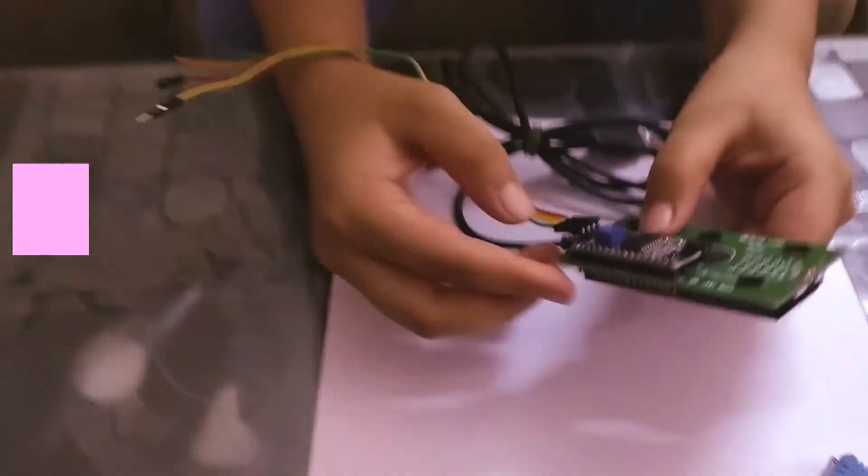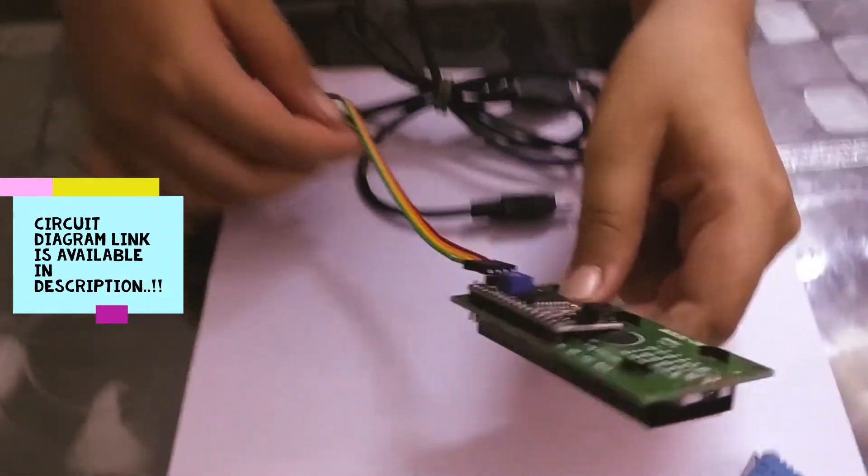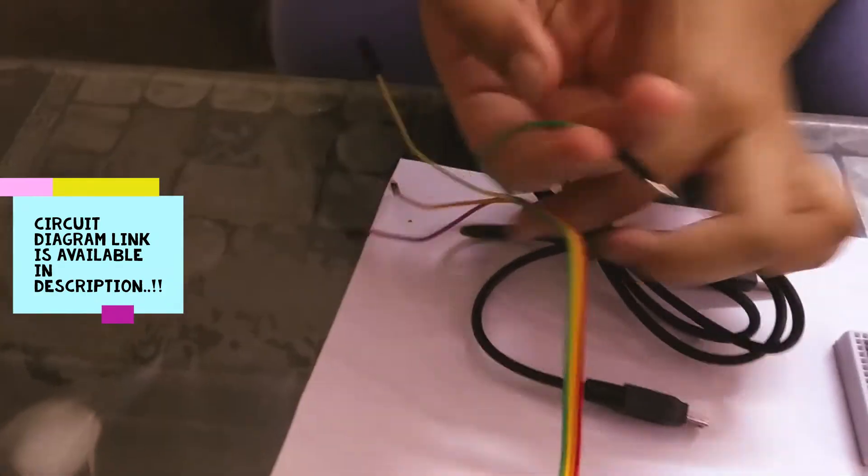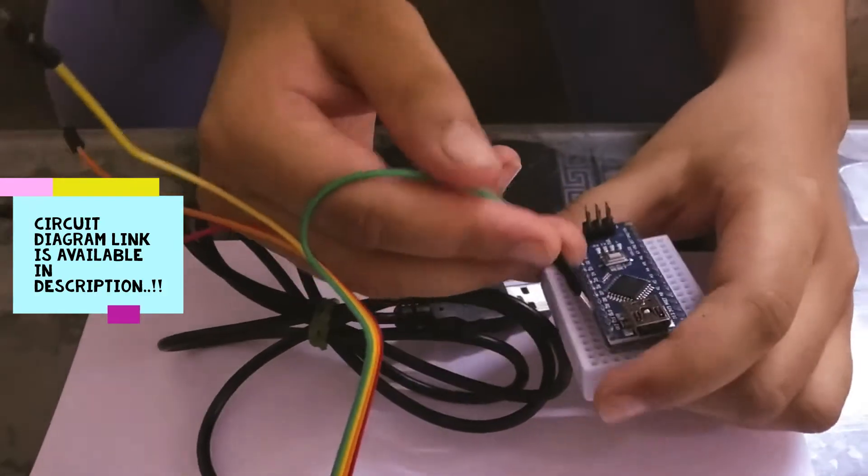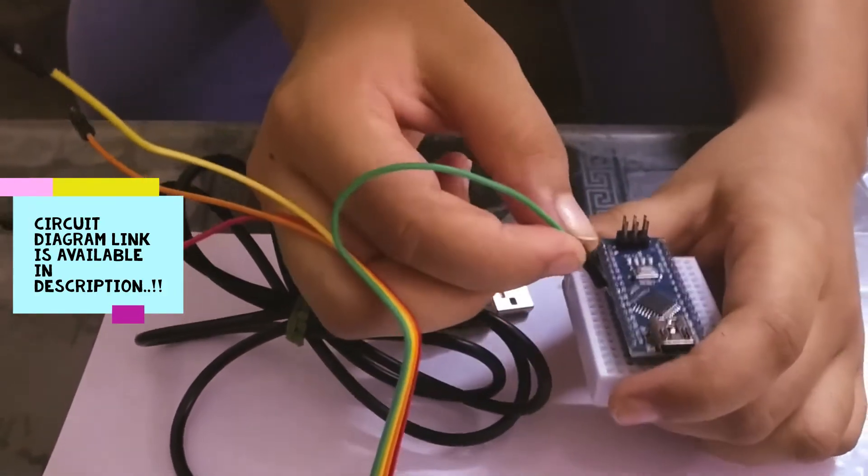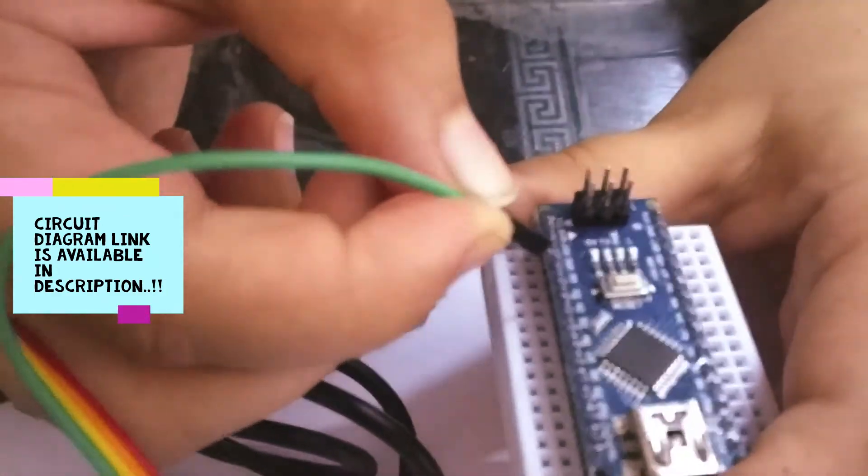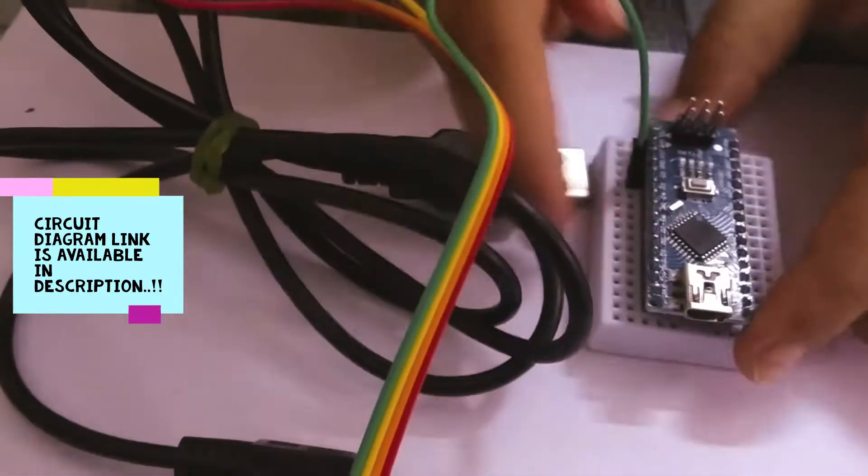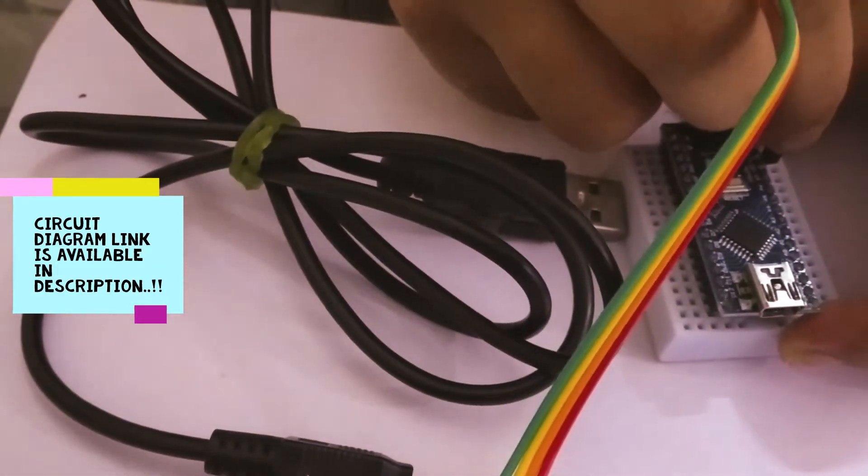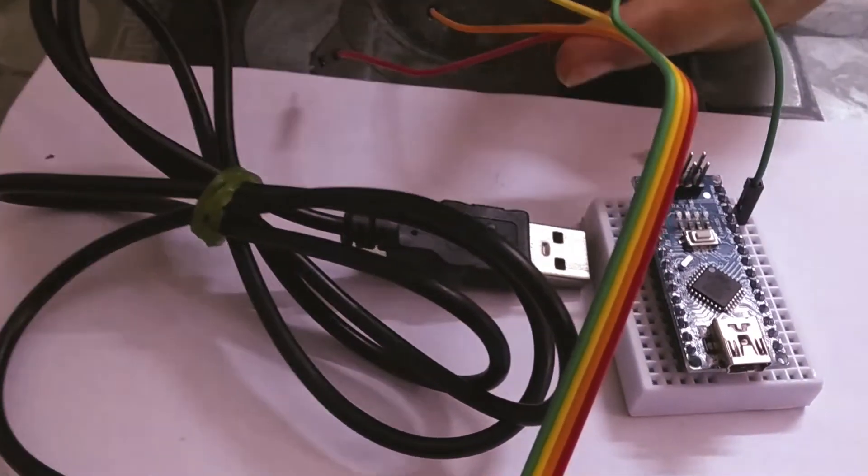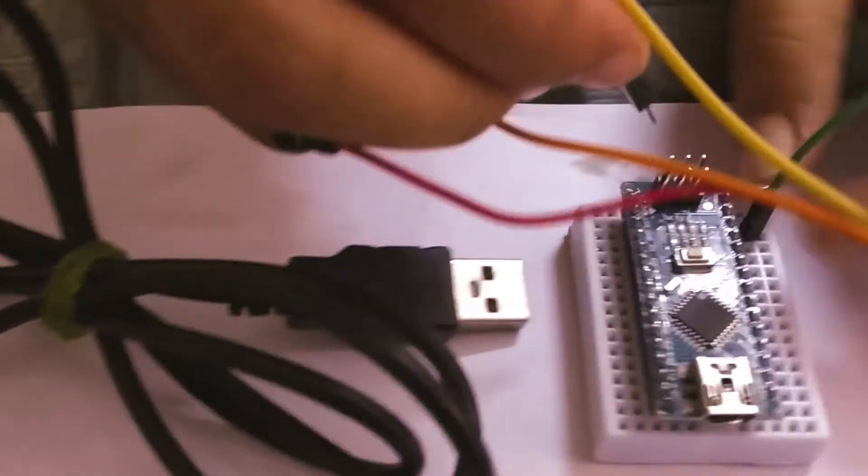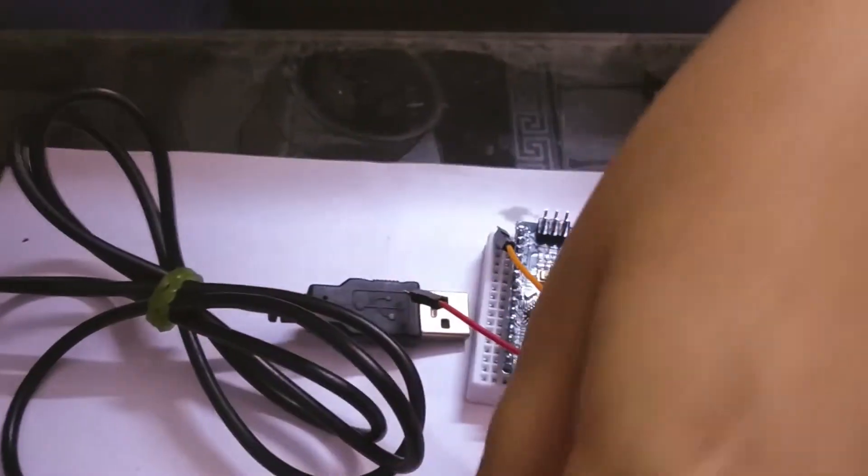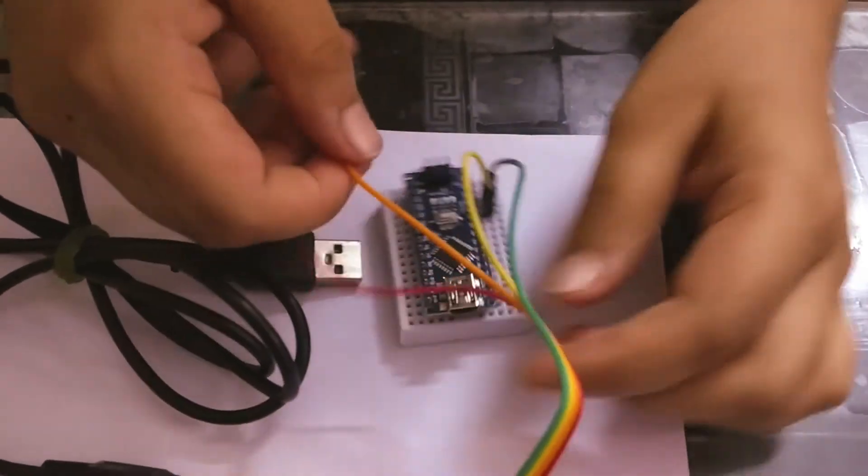Let's start. First, the GND goes in the GND of the Arduino Nano. The GND is the green color wire. There are 2 GNDs in this Arduino Nano. I am going to be using the GND which is next to the 5V. Now the VCC, which is yellow in color, goes in the 5V.